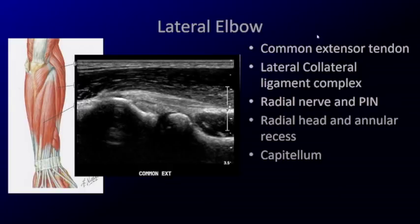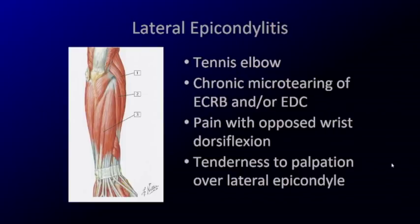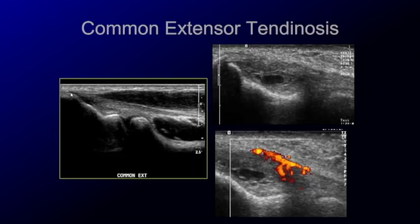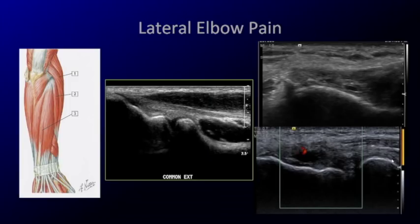For the lateral elbow, I'll focus on the common extensor tendon and the deeper radial collateral ligament. Lateral epicondylitis, same as medial epicondylitis, is not inflammatory — it is degenerative tendinosis. Here's normal; here's abnormal: thickened, heterogeneous, with hypoechoic areas and sometimes intrasubstance tearing. You can have increased power Doppler flow. Here's another example with cystic spaces or hypoechoic nodules in the tendon and increased vascularity.